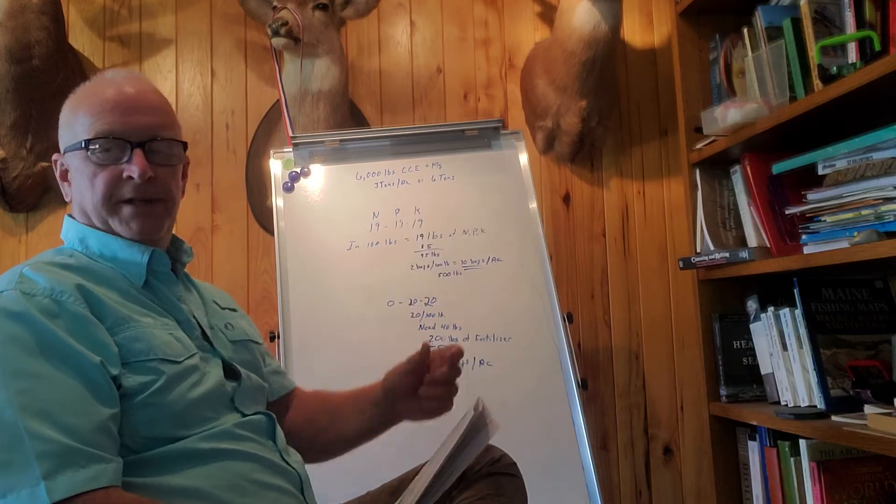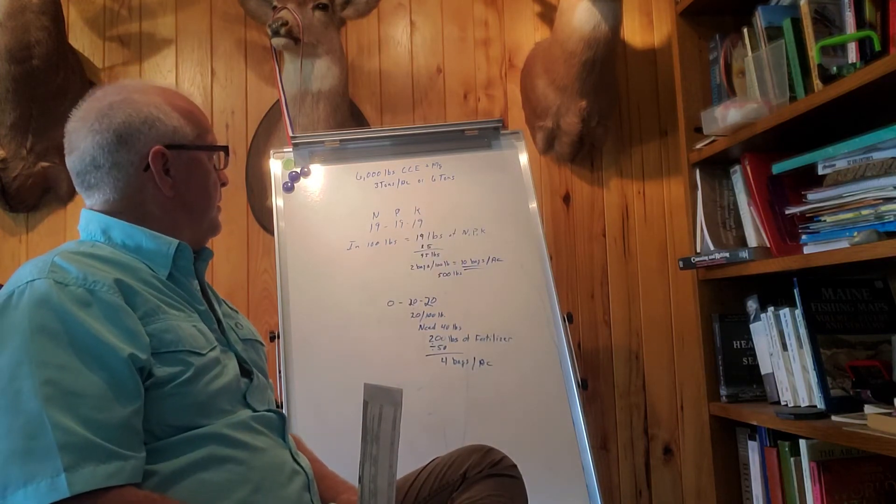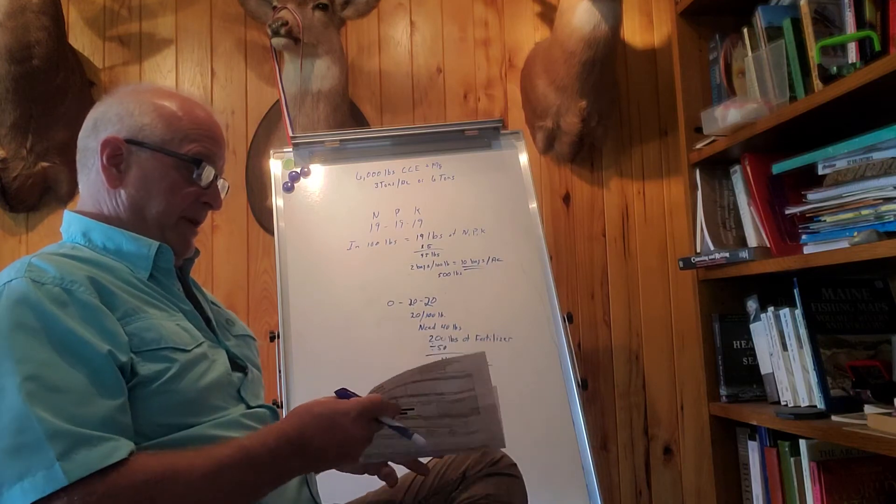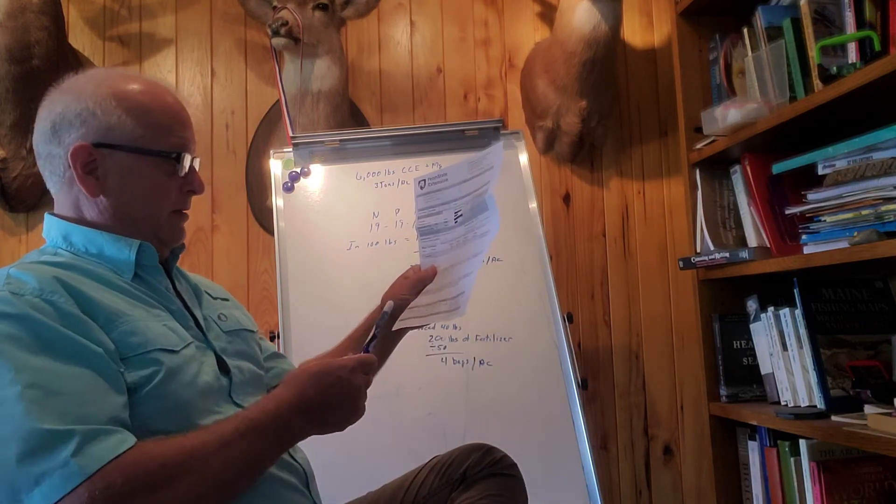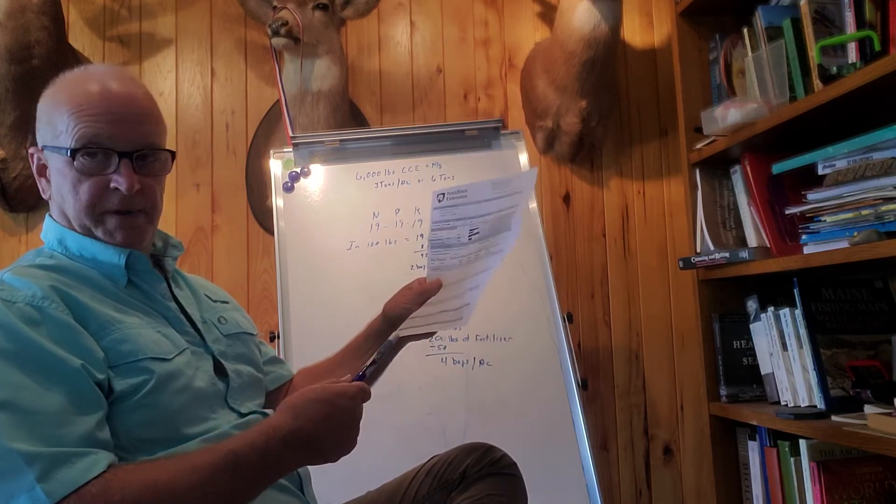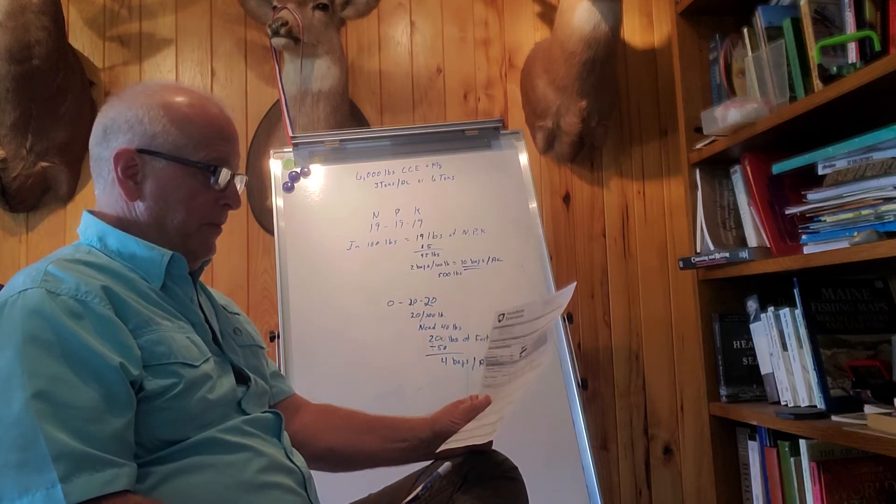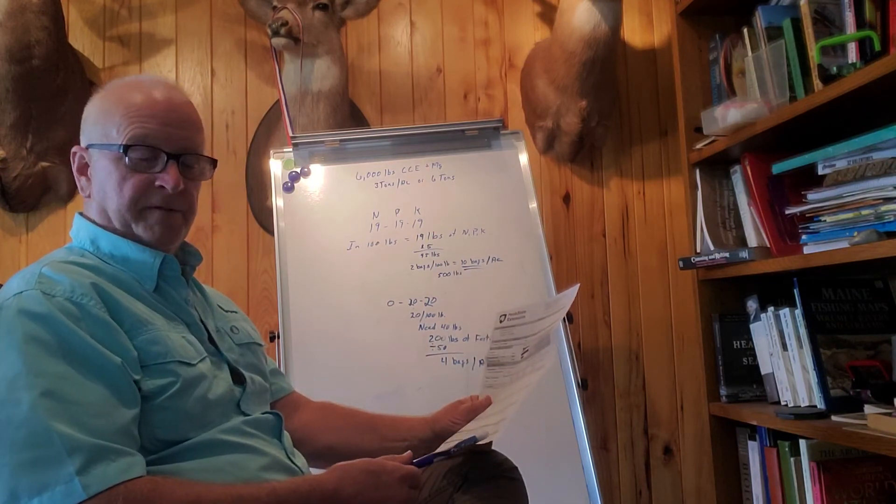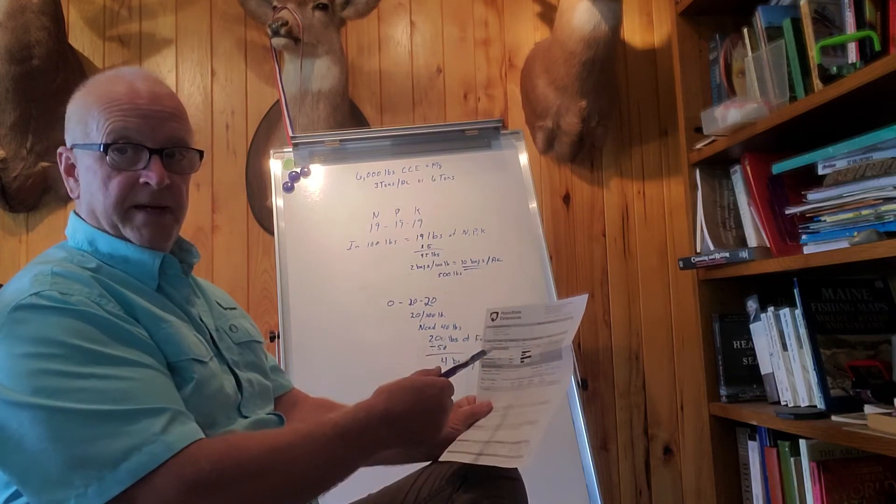That's about it for the NPK. Looking down at the bottom here, my micros are about typical for Pennsylvania; they're kind of low. It wouldn't hurt to put a little elemental sulfur. We're going to get our magnesium out of the lime.